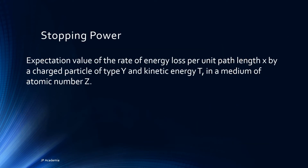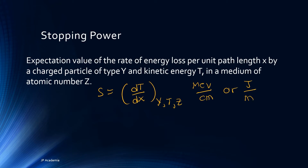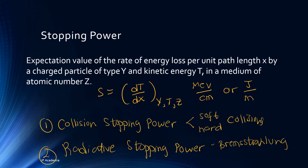We have this quantity called the stopping power. It is the expectation value of the rate of energy loss per unit path length x by a charged particle of type y and kinetic energy T in a medium of atomic number Z. Dividing the stopping power by the density rho of the absorbing medium results in a quantity called the mass stopping power. When one is interested in the fate of the energy loss, stopping power may be divided into two: first, the collision stopping power, which refers to the energy losses incurred in ionization and excitation events, generally called collisional losses.